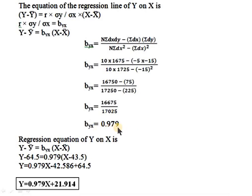Therefore b_yx equals 0.979. The regression equation of y on x is: y − y-bar equals b_yx times (x − x-bar), so y − 64.5 equals 0.979 times (x − 43.5). Solving: y equals 0.979x − 0.979×43.5 + 64.5 equals 0.979x − 42.586 + 64.5, giving y equals 0.979x + 21.914. This is the final boxed answer.